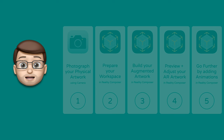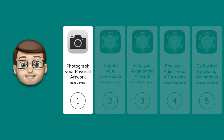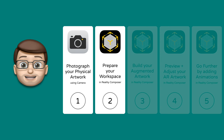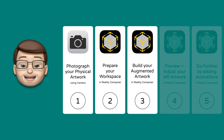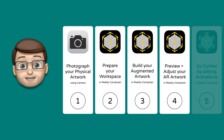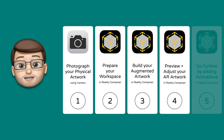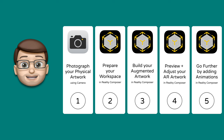We're going to follow five easy steps to make this work. Step one: take your piece of artwork and bring it onto your iPad as an image. Then in Reality Composer we'll set that image as our anchor point. Step three: build the experience using text and objects. Step four: make it come to life using the AR camera. And step five: add animations to make your text and objects pop out of the screen.